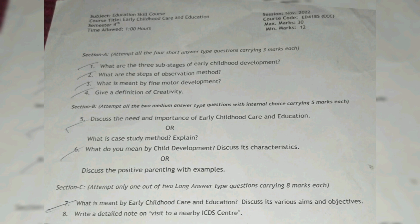Section B — attempt all 2 medium answer type questions with internal choice, carrying 5 marks each. 2 into 5 is equal to 10 marks. Question number 5: Discuss the need and importance of early childhood care and education, or what is the KCTD method? Explain.